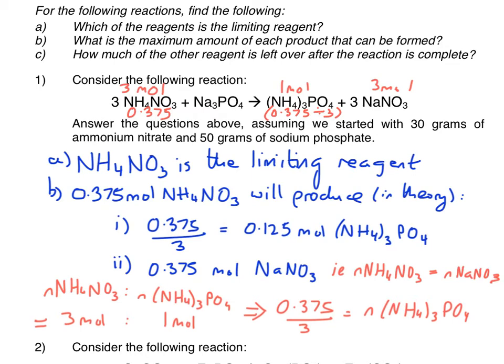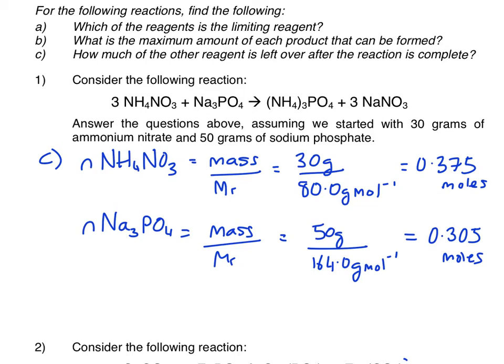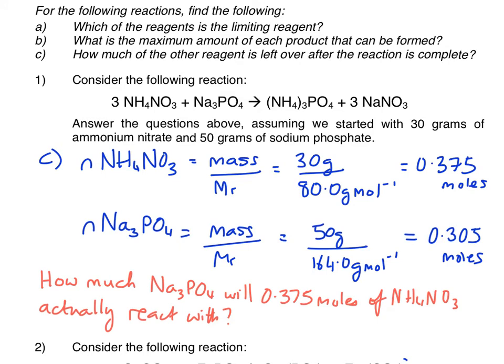So now all we have to do is work out how much of the other reagent is left over. And we revisit the mole calculations we did a couple of minutes ago. We now know how many moles of each one of the reagents we've got. So we can work out the excess Na3PO4. So the question this poses is how much Na3PO4 will our 0.375 moles of NH4NO3 actually react with? So seeing as it's a 3 to 1 mole ratio, you divide your 0.375 by 3.